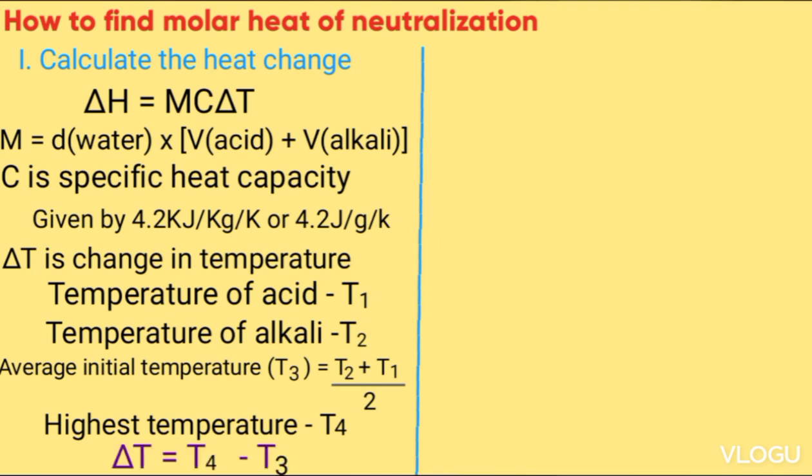So delta T will be the final temperature T4 minus the average initial temperature T3.